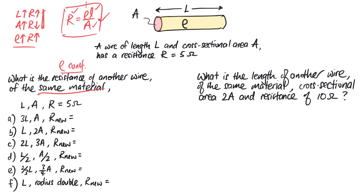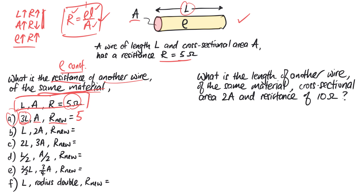Let's practice. The original conductor has cross-sectional area A, length L, and resistance 5 ohms. For wire A — same material, three times longer, same cross-sectional area — since it's three times longer, the resistance will be three times greater: 5 × 3 = 15 ohms.